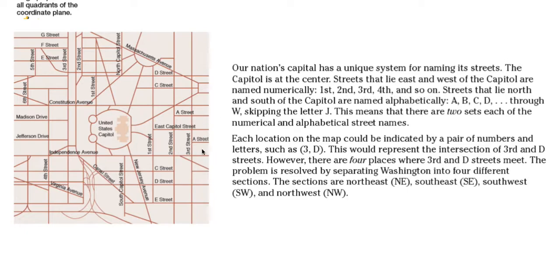So there you go — first, second, third, fourth going one direction, and first, second, third going the other direction. Streets that lie north and south of the capital are named alphabetically: A, B, C, D, all the way to W, skipping the letter J. This means that there are two sets each of the numerical and alphabetical street names.